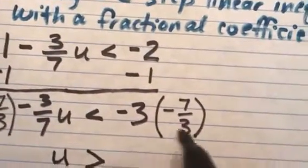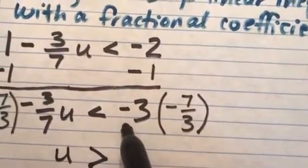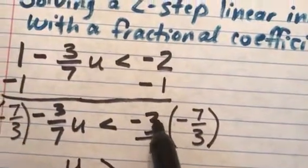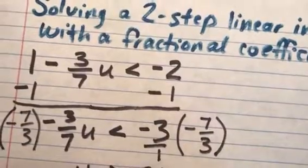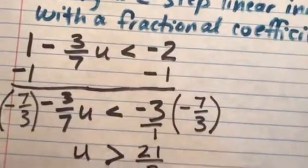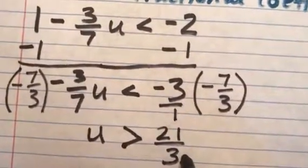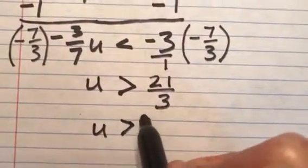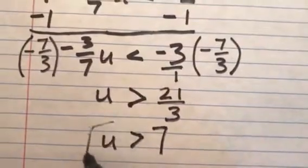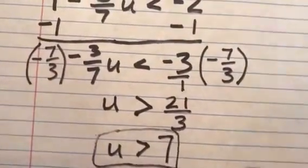And on the right-hand side, let's make this negative 3 a negative 3 over 1. And then negative 3 times negative 7 is positive 21 over 3. I can divide 21 by 3, and that would be u is greater than 7. And so that is my answer for this first example.